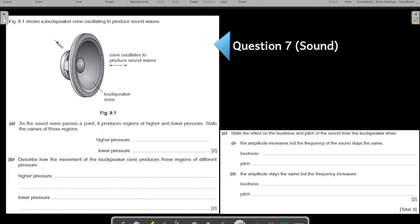Let's start with question number seven. You may pause the video and then come back to look at the answers. The figure here shows a loudspeaker cone oscillating to produce sound waves. It's a circular diaphragm - a flexible, slightly movable thing that oscillates backward and forward. Part A: as the sound wave passes a point, it reaches a region of high and low pressure. State the names of these regions. Again, this is a repeating question.